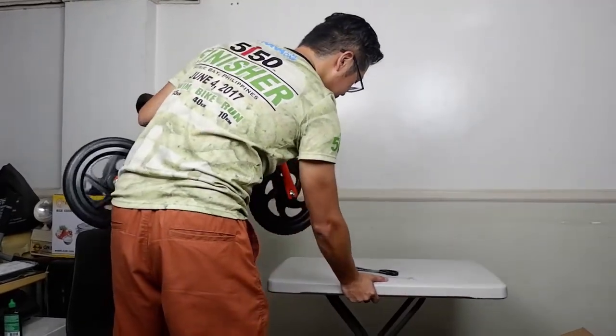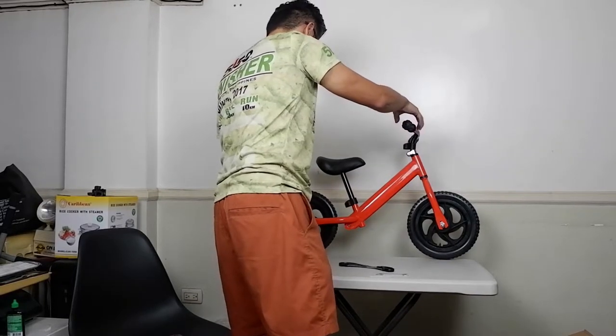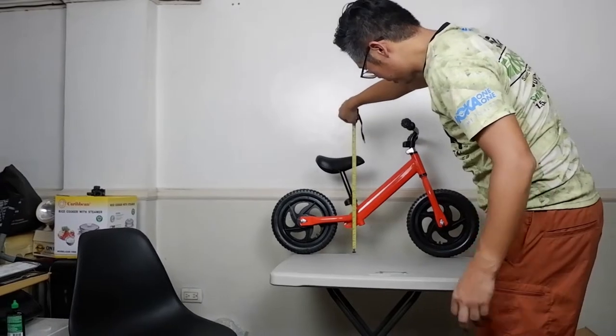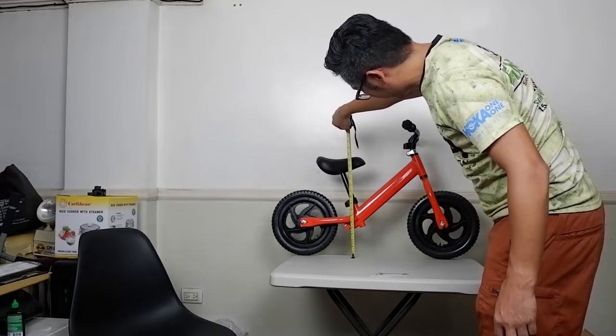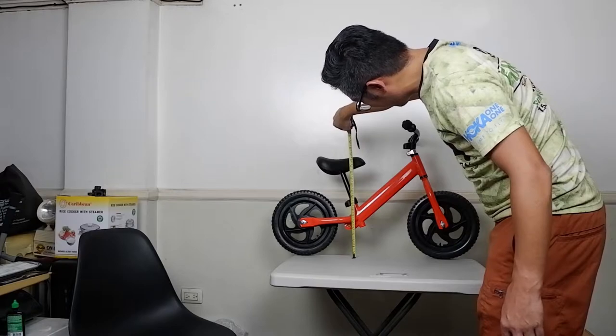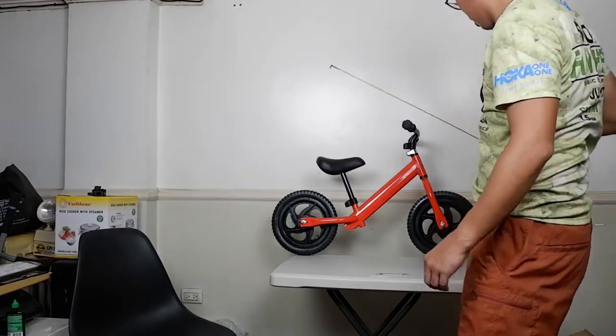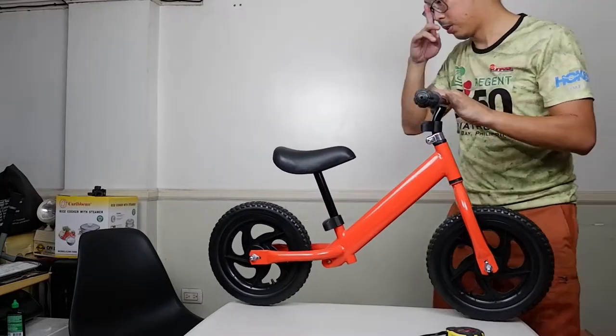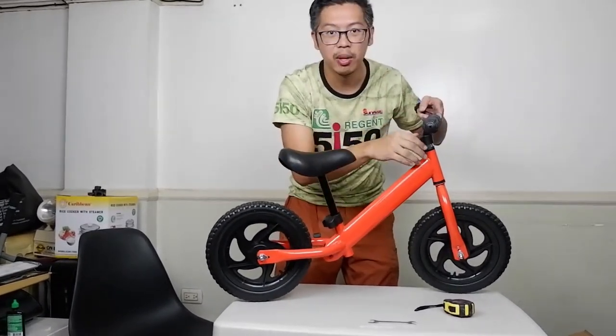So let's do a measuring. The saddle. So I think this is the best, this is around floor to saddle highest is 17 inch. And around minimum drop down 12 inch. Okay.